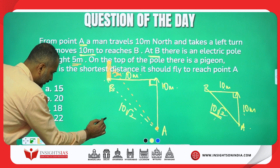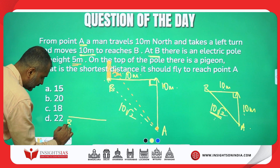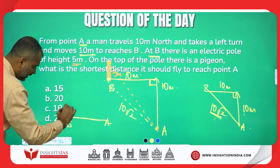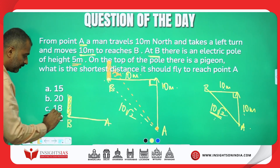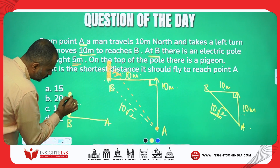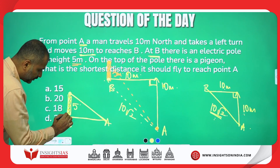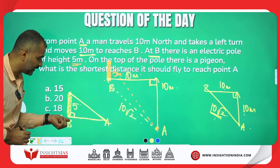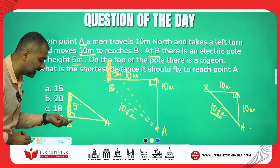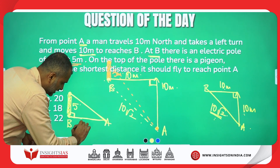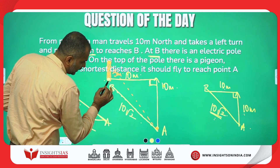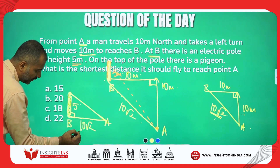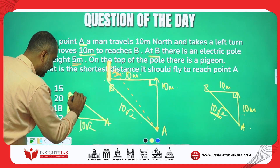I'm redrawing from A to B. Once we reach B, there is an electric pole of height 5 meters. From the top of the pole to point A — the pole always makes a 90-degree angle to the ground; height is altitude and altitude is always perpendicular to the ground. So the distance A to B is 10√2, and the pole height is 5 meters, making a 90-degree angle with the ground.